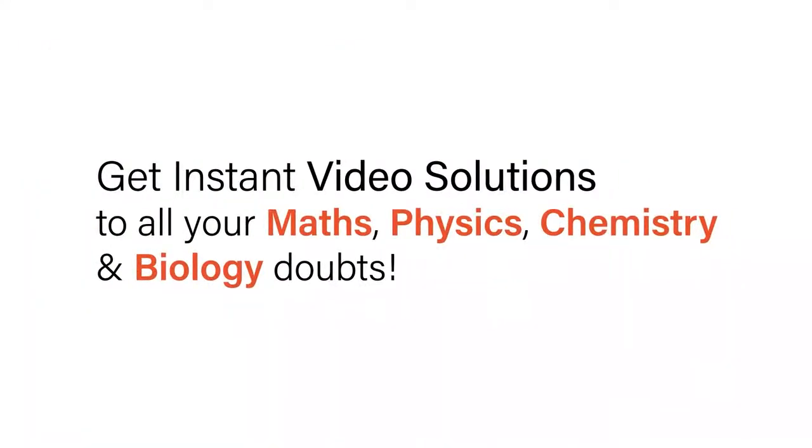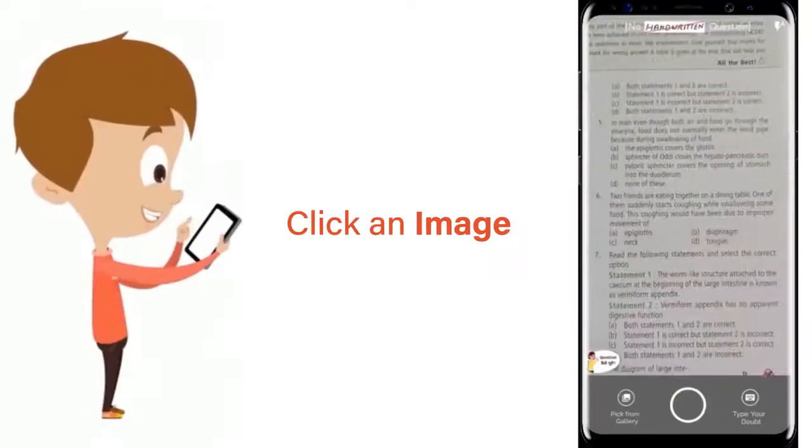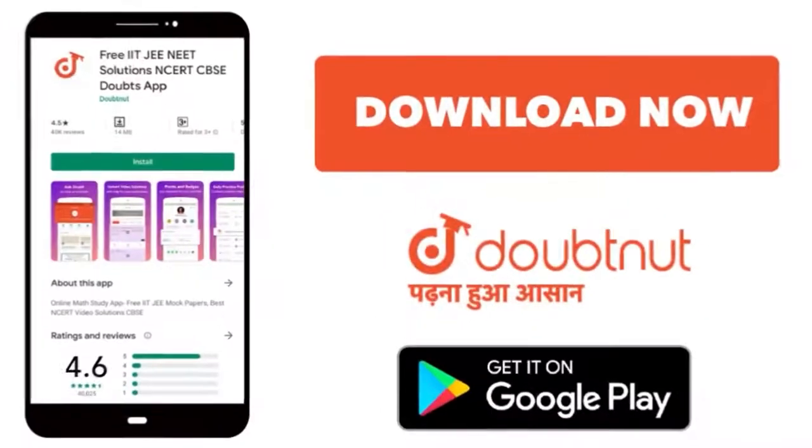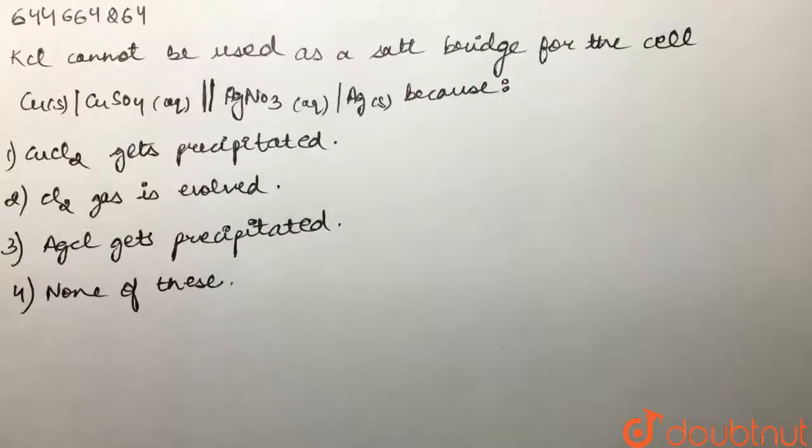With Doubtnut, get instant video solutions to all your math, physics, chemistry, and biology doubts. Just click the image of the question, crop the question, and get instant video solution. Download Doubtnut app today. Our question is: KCl cannot be used as a salt bridge for the cell.